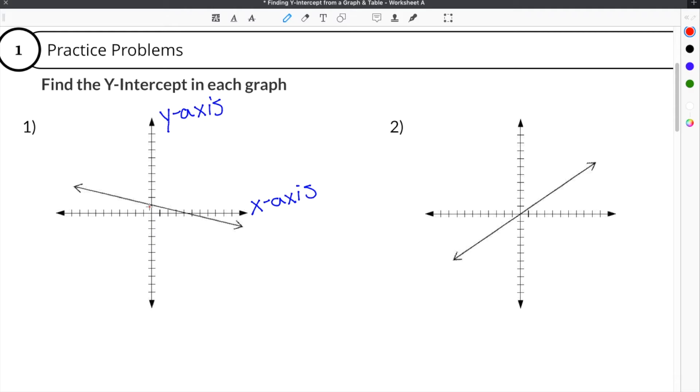If you look at our first example here, the line crosses the y-axis right here when y equals 1. That means our y-intercept has to be 1. And that's our solution.